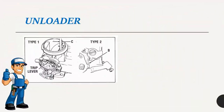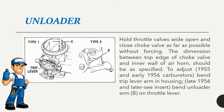Unloader: Hold throttle valves wide open and close choke valve as far as possible without forcing. The dimension between top edge of choke valve and inner wall of air horn should be as specified. To adjust: for 1955 and early 1956 carburetors, bend trip lever arm and housing; for late 1956 and later, bend unloader arm E on throttle lever.